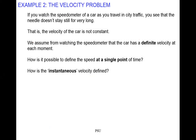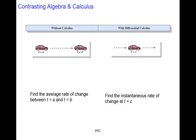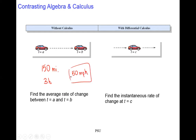Now let's look at the velocity problem. We know how to find the average rate of change or average velocity. But the question is: how can we define the velocity at one instant, at one point? When driving, I can compute that I drove 150 miles in 3 hours, giving 50 miles per hour as average velocity. But what about my speed at exactly one hour into the trip?